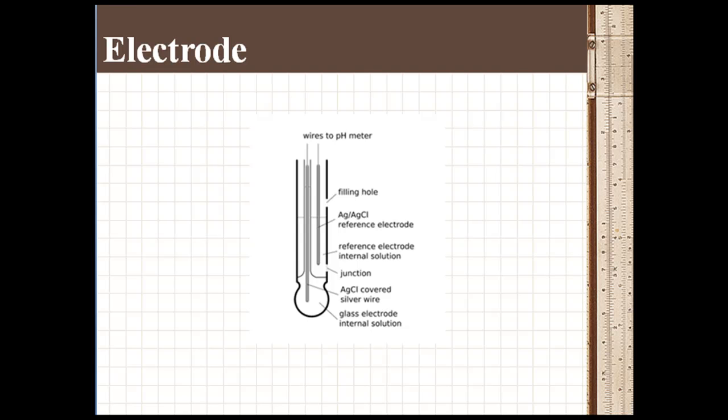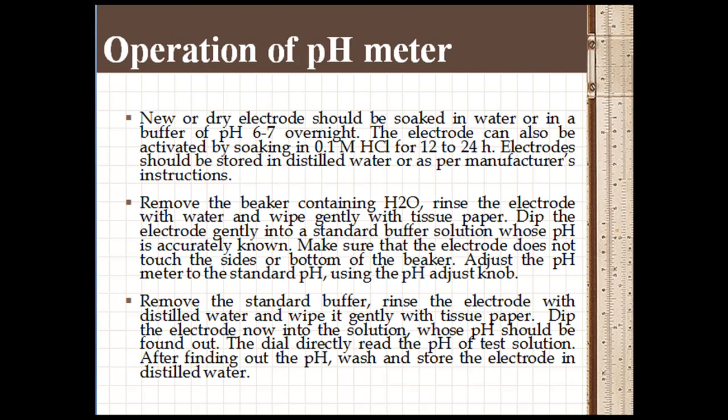Now, the next aspect is the operation of the pH meter. New or dry electrodes should be soaked in water or in buffer of pH 6 to 7 overnight. The electrode can also be activated by soaking in 0.1 molar HCl for 12 to 24 hours. Electrodes should be stored in distilled water or as per manufacturer's instructions.